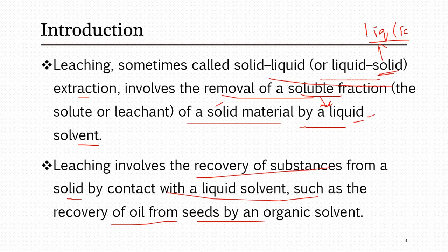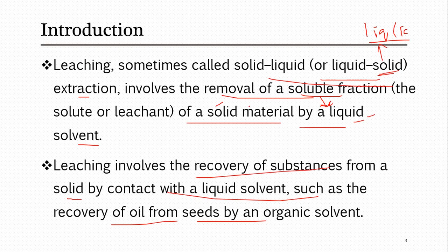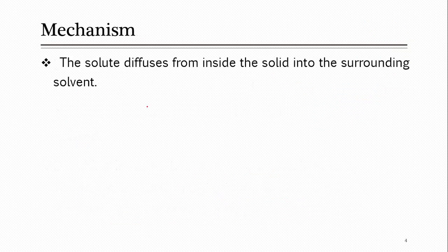So the brief introduction is: leaching involves one solid and a liquid, where the purpose of the liquid is to extract some parts of the solid — specifically those parts which are soluble in the externally introduced liquid. Let us look at the mechanism. The solute — the soluble fraction being removed — diffuses from inside the solid into the surrounding solvent.